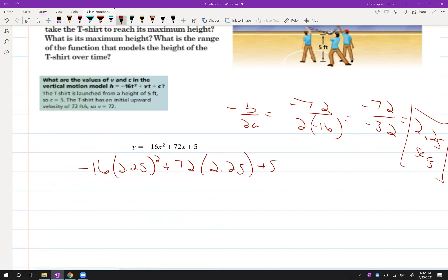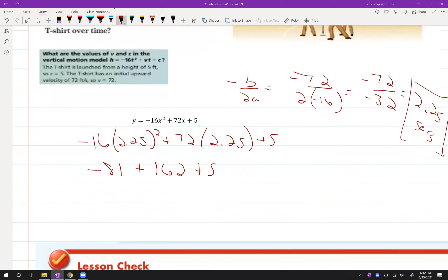So here we go. Let's square it times negative 16. So we get negative 81 plus 72 times 2.25, 162 plus 5. Somebody that's done a whole bunch of these just told you a little bit ago. These are always half of each other. So it's 81 plus 5. So it's 86 feet.